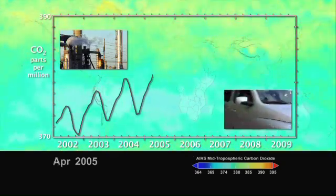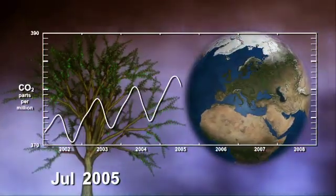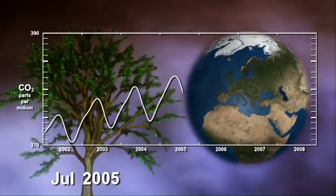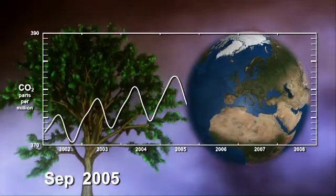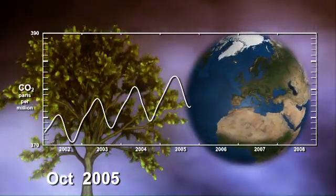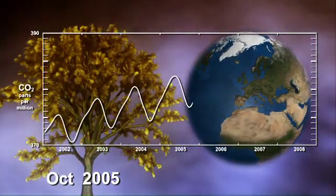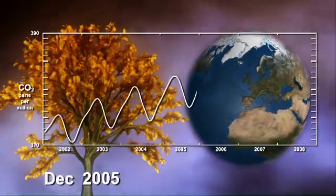In photosynthesis, plants absorb sunlight and carbon dioxide to make oxygen. And in what's known as respiration, plants produce small amounts of carbon dioxide that is released back into the atmosphere.